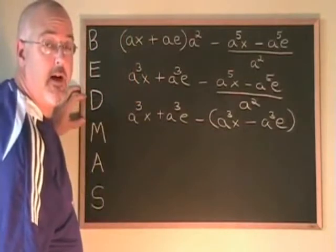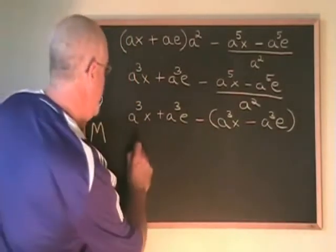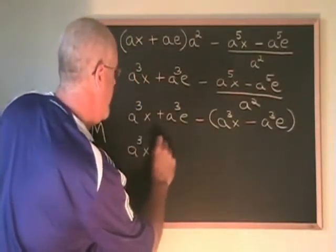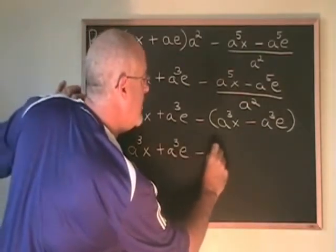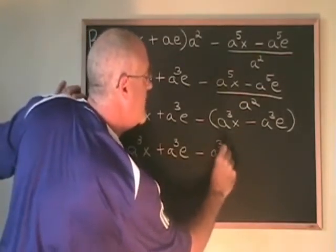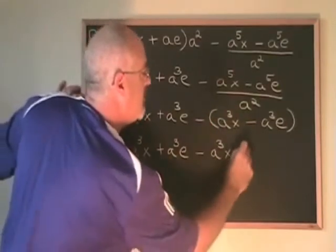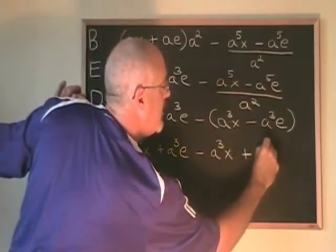Now it's time to remove our bracket and correct the signs. We have minus a cubed x and minus minus makes plus a cubed e.